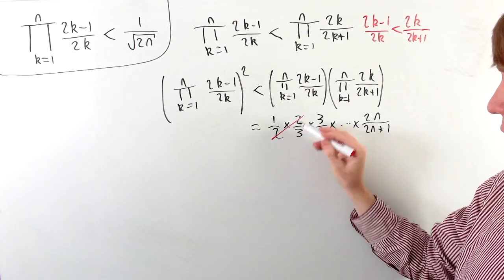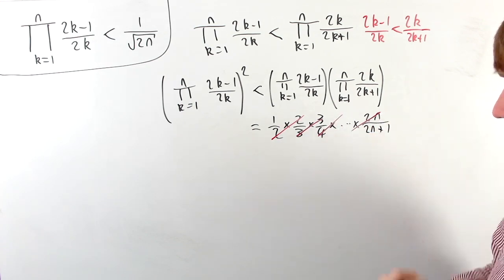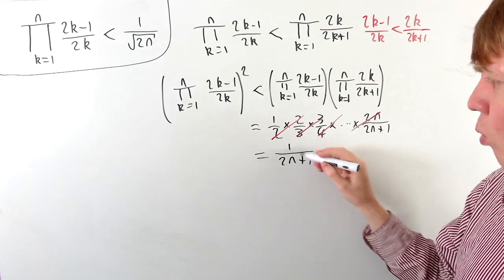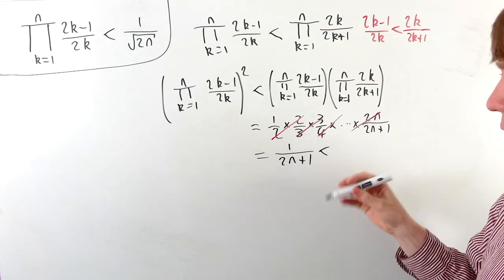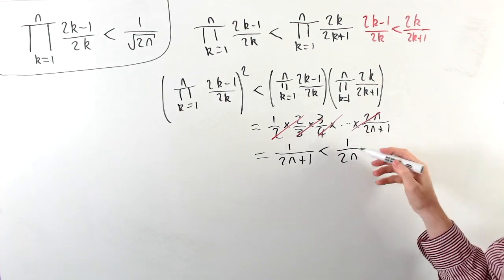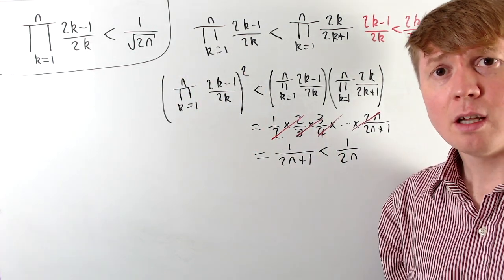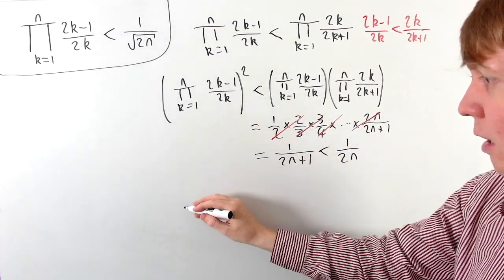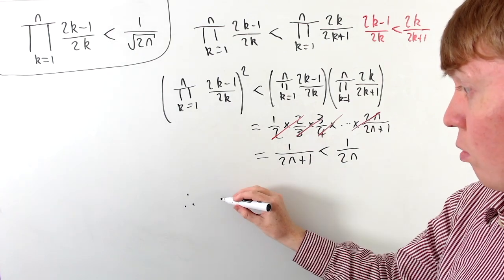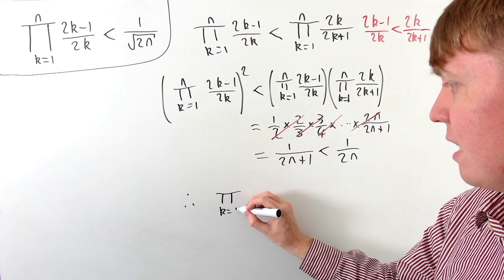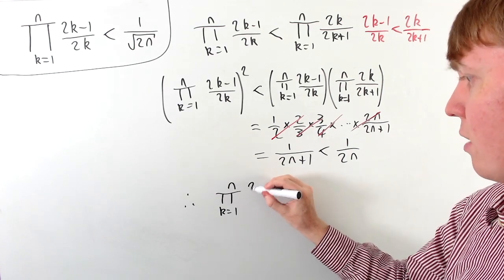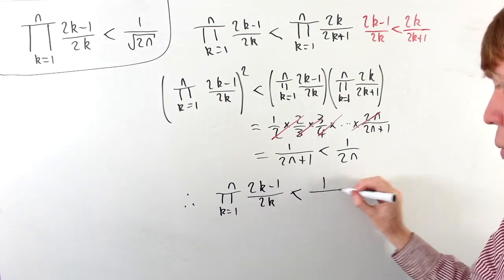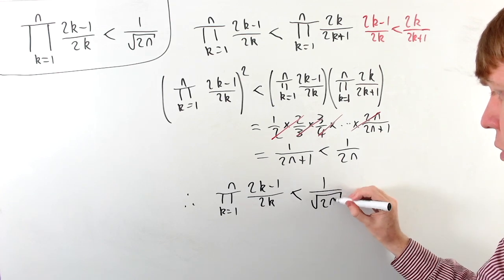Once again we get all of this cancellation — the 2's, 3's, 4's, all the way up to 2n cancel — and this equals 1 over 2n+1. We notice that 1 over 2n+1 is less than 1 over 2n, giving a slightly more satisfying formula. Taking square roots, since the square of our original product is less than 1 over 2n, we can conclude that the product from k=1 to n of (2k−1) over 2k is indeed less than 1 over the square root of 2n, completing the generalisation.